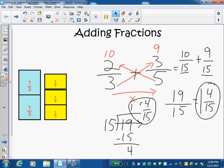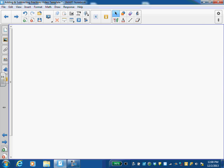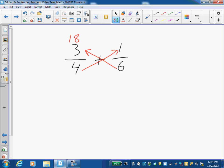Okay, let's do one more problem just to make sure we know what we're doing. Let's take three-fourths and add that to one-sixth. Step one is I'm going to cross multiply: six times three is eighteen and four times one is four. My next step is I'm going to multiply the denominators.